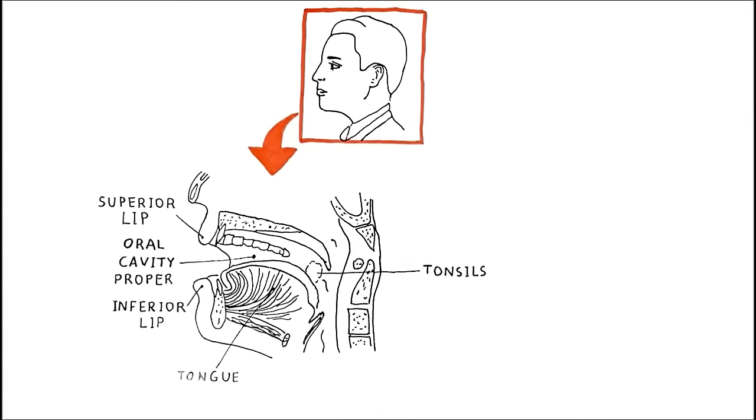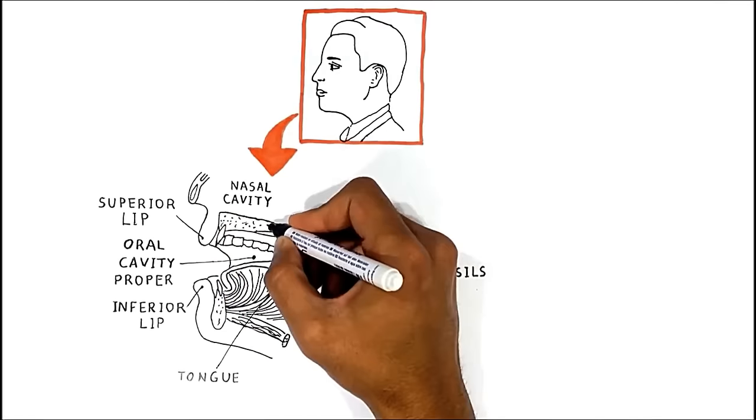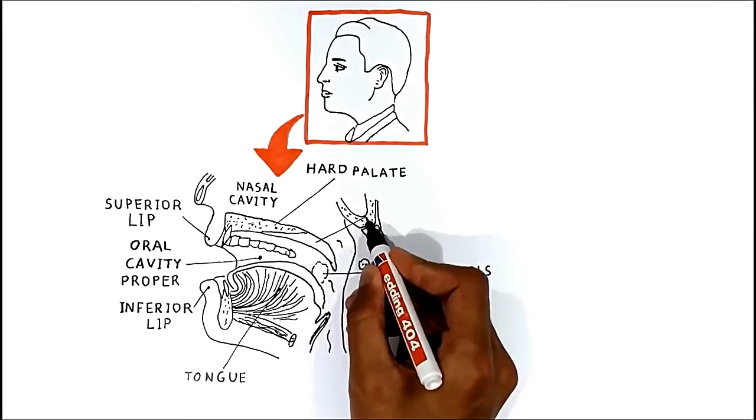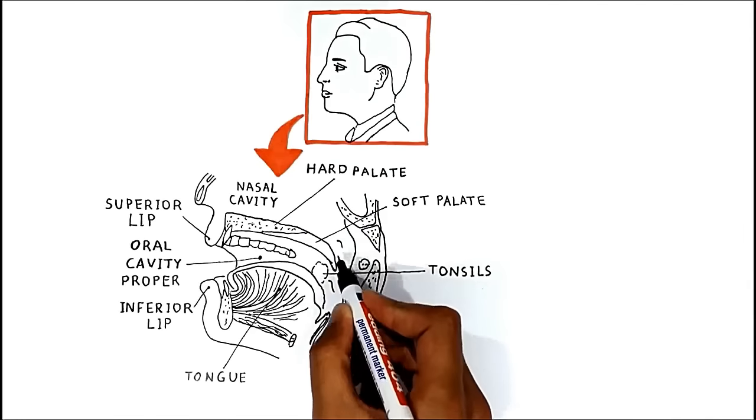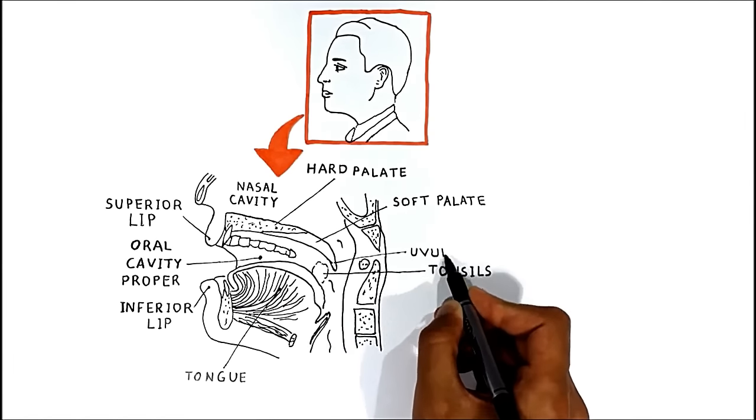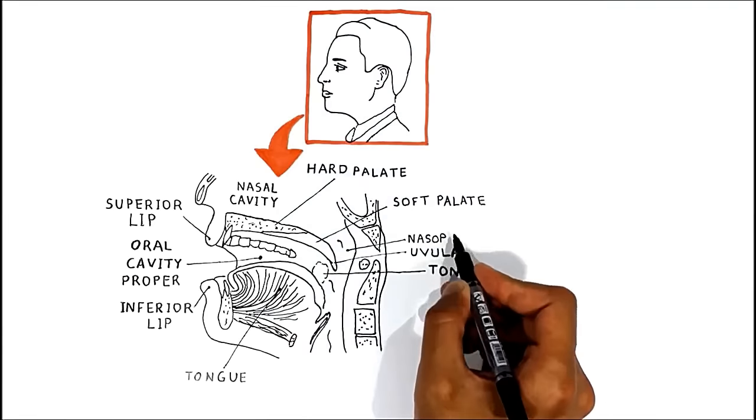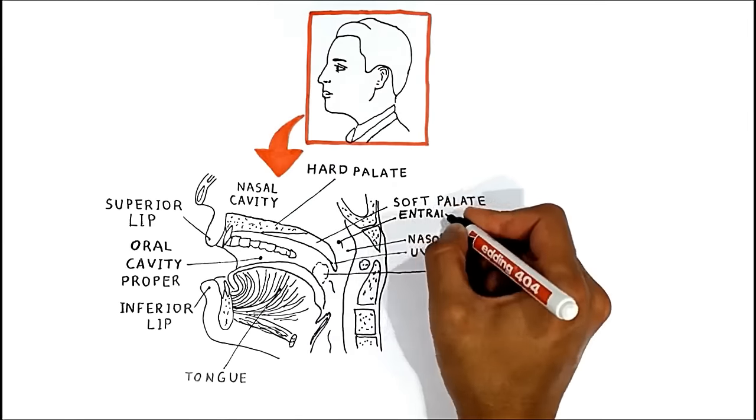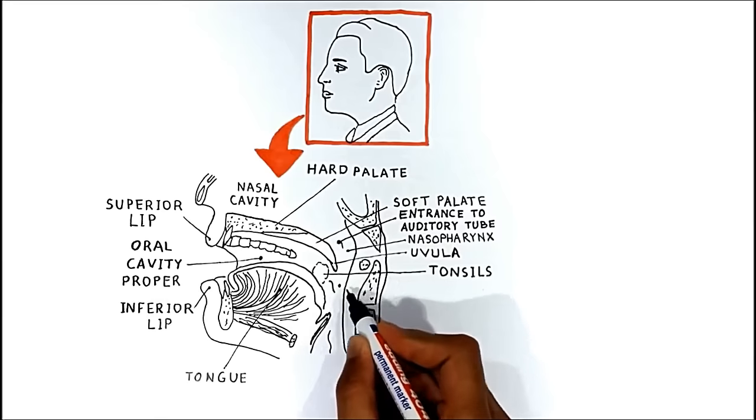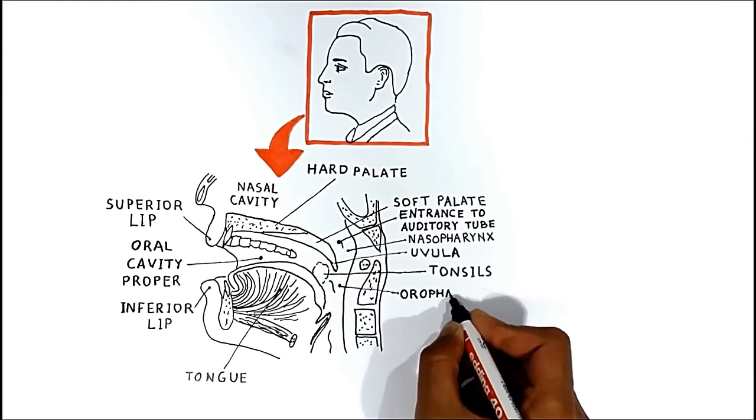Talking about the surrounding structures, over here is the nasal cavity, which is separated from the oral cavity by the hard and soft palate. The soft palate terminates and adjourns to the uvula. Here is your nasal pharynx, where the entrance to the auditory tube is located. Posteriorly and inferiorly to the oral cavity is the oral pharynx.